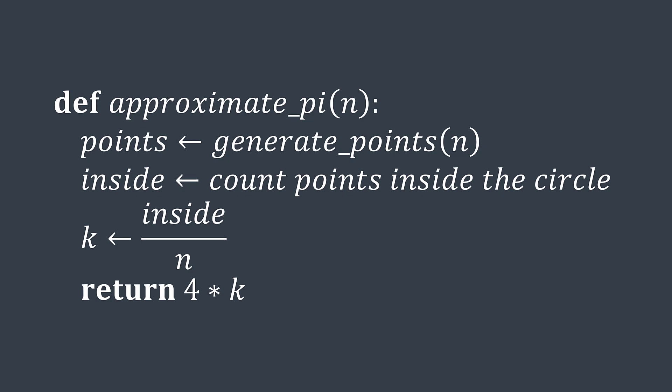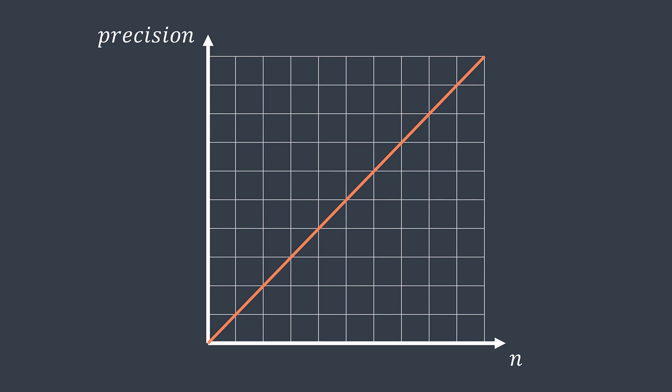Obviously points are not occupying the whole area, we won't get the exact value of K. This is why we'll just get an approximation of Pi. But in general, the more points we generate, the more our approximation will be close to the real value of Pi. We'll see it in the experimentation part.